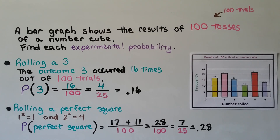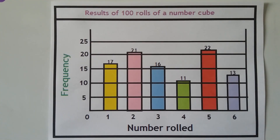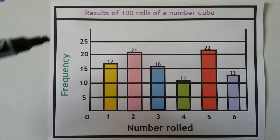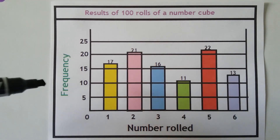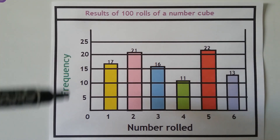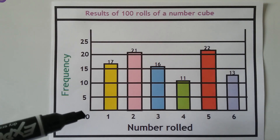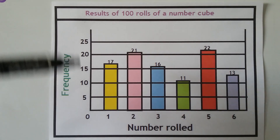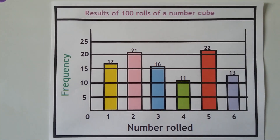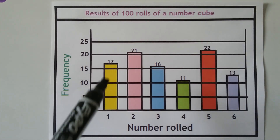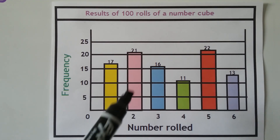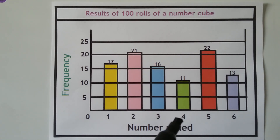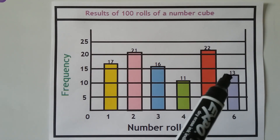A bar graph shows the results of 100 tosses — 100 trials — of a number cube. The frequency shows how often each number was rolled out of 100: a 1 appeared 17 times, a 2 appeared 21 times, a 3 appeared 16 times, a 4 appeared 11 times, a 5 appeared 22 times, and a 6 appeared 13 times. Adding these frequencies totals 100.